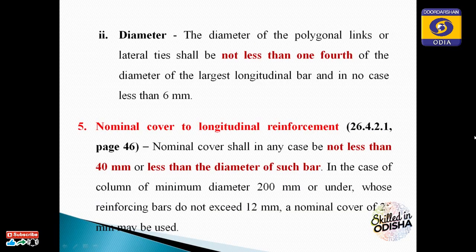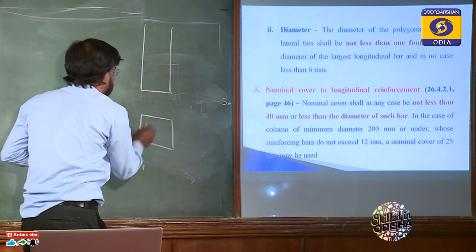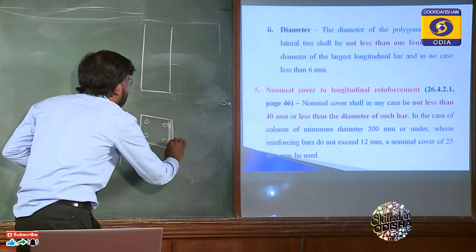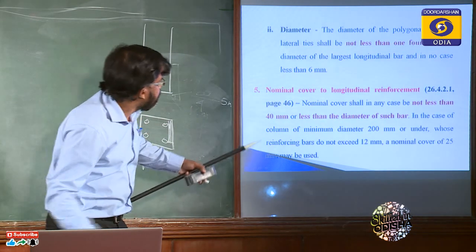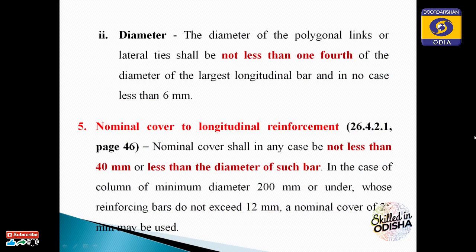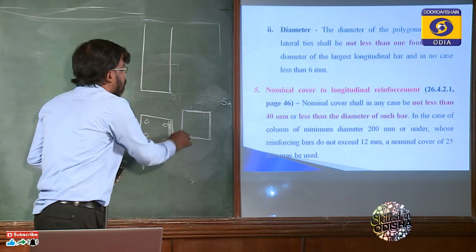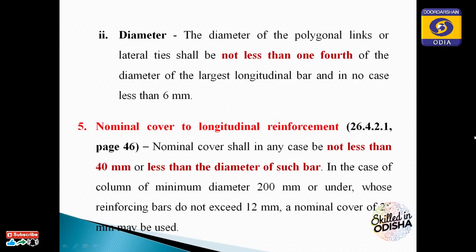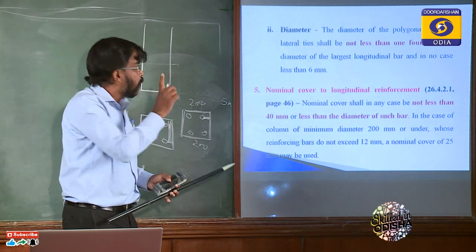Nominal cover is the distance from the outer face of the column to the outermost reinforcement. This cover shall not be less than 40mm. However, for columns of minimum dimension 200mm whose reinforcement does not exceed 12mm diameter, a cover of 25mm may be provided.